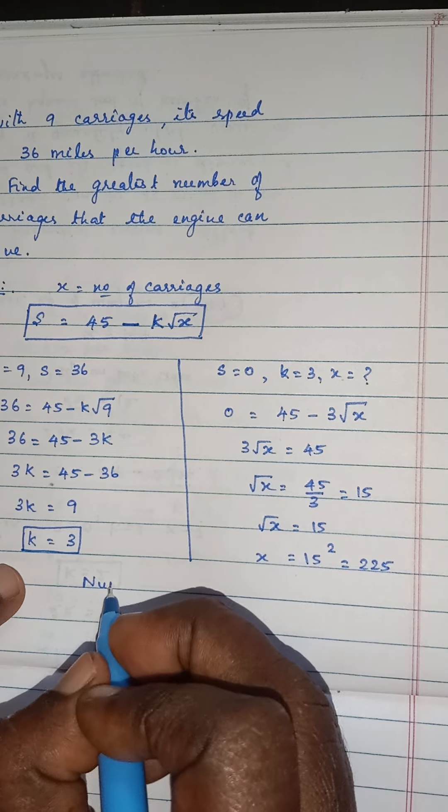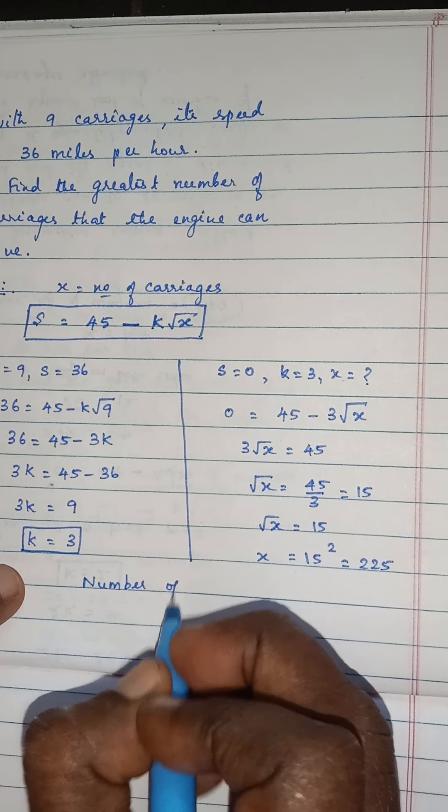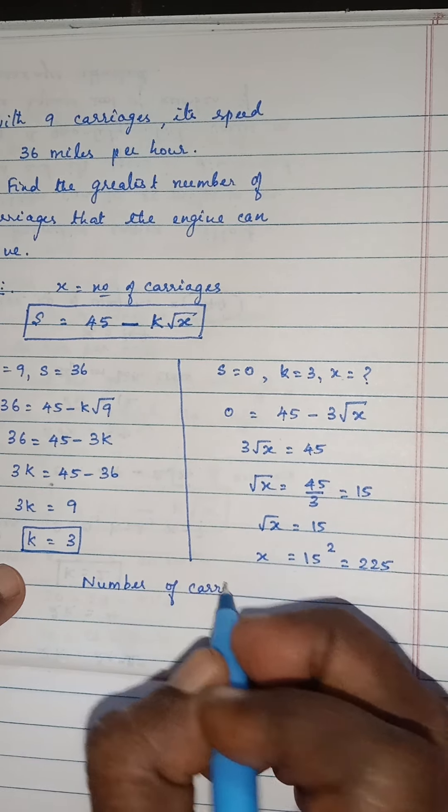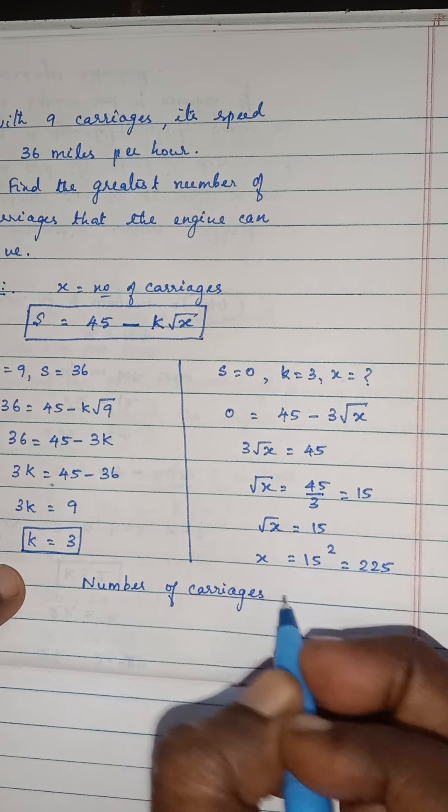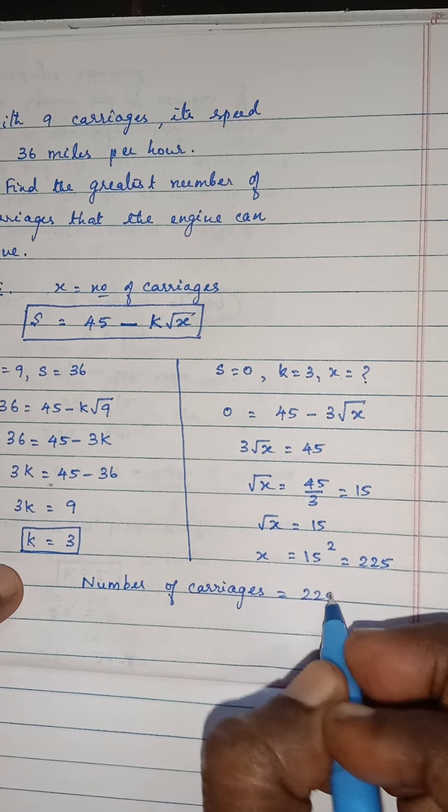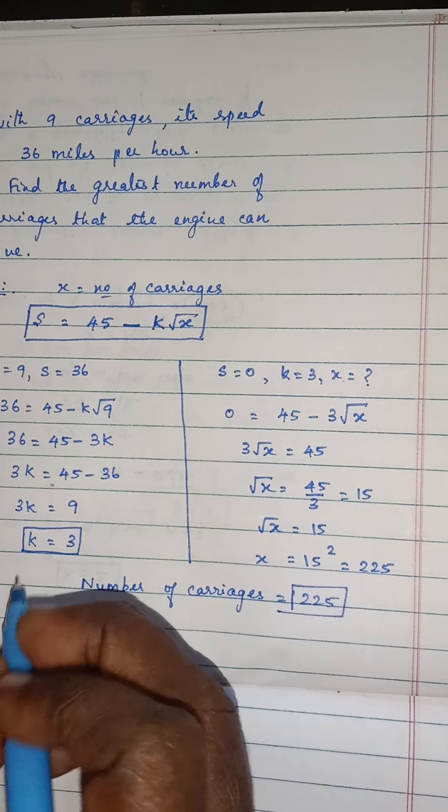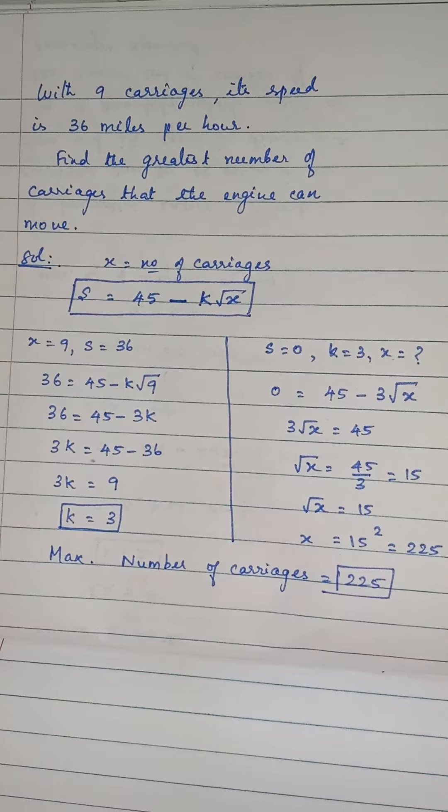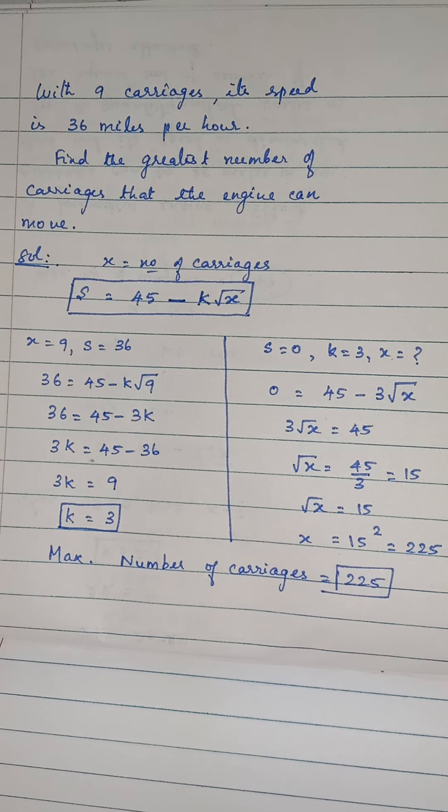Number of carriages is 225. Root x is 15, 15 times 15 equals 225. Maximum number of carriages is 225 carriages attached to the engine.